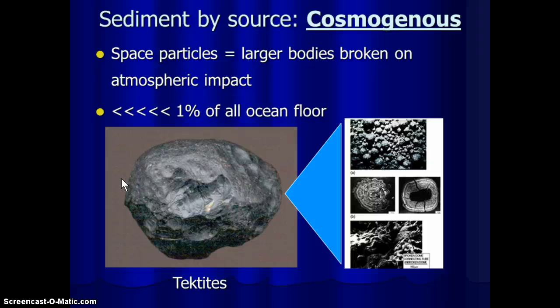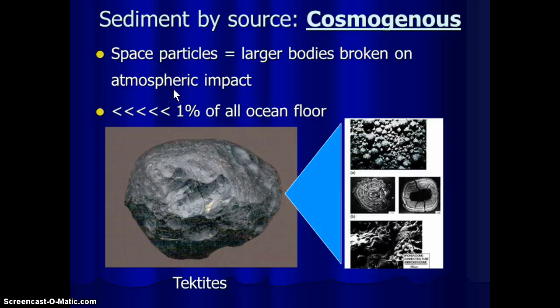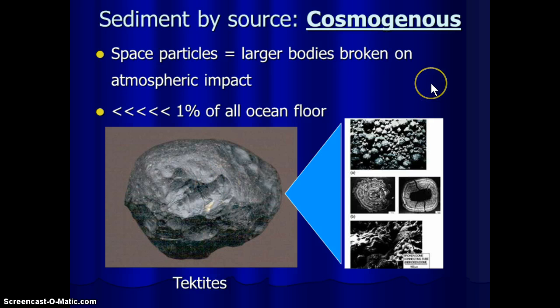The last type to know is cosmogenous — produced from the cosmos. We're literally talking about space particles. Large bodies of rock like meteorites in space impact the Earth's atmosphere, break up into tiny particles, and if they fall on the ocean and settle to the seafloor, they make up a detectable but very small portion of marine sediments — much, much less than 1% of all the ocean floor, but they are a realistic, measurable part.